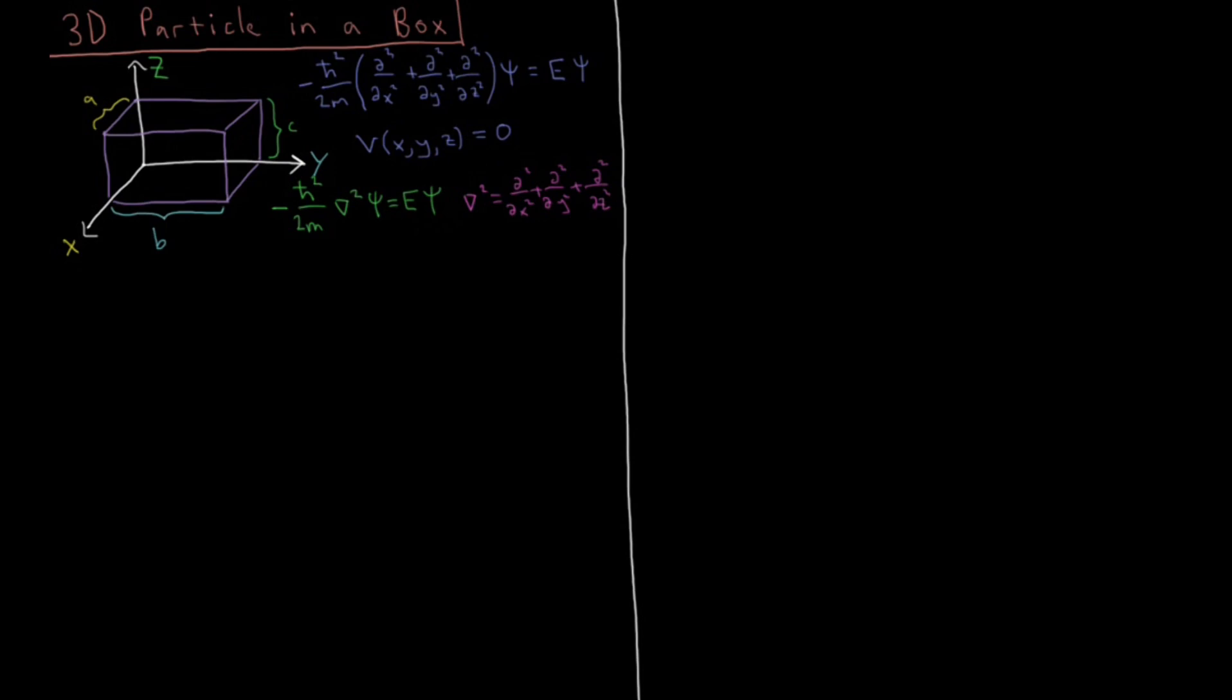Okay, so then for the boundary conditions that we have for this system, we have that psi of where x equals zero for all y and z, and psi where x equals a, the other edge of the box on the x dimension, equals zero. And that's for all y and z, all real values of y and z.